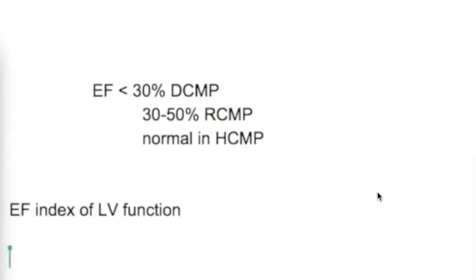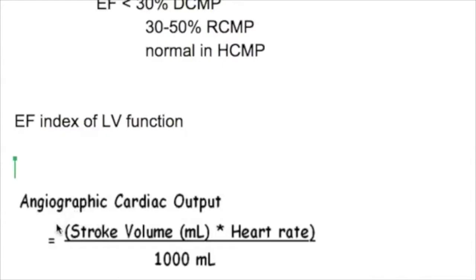What is the difference in ejection fraction between different types of cardiomyopathies? Ejection fraction is less than 30 percent in dilated cardiomyopathy, between 30 to 50 percent in restrictive cardiomyopathy, and is normal in hypertrophic cardiomyopathy.